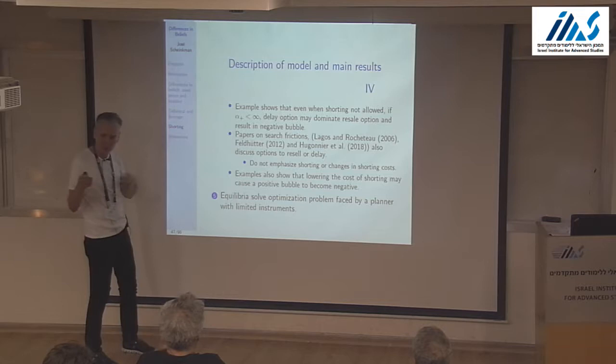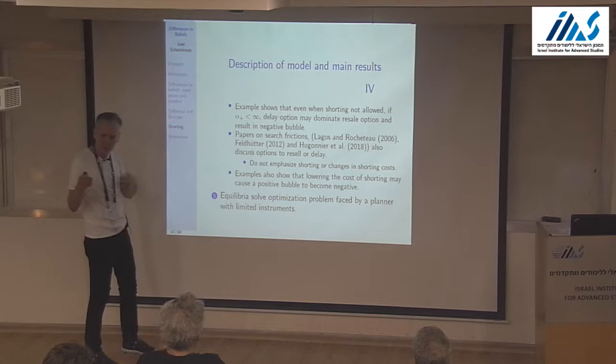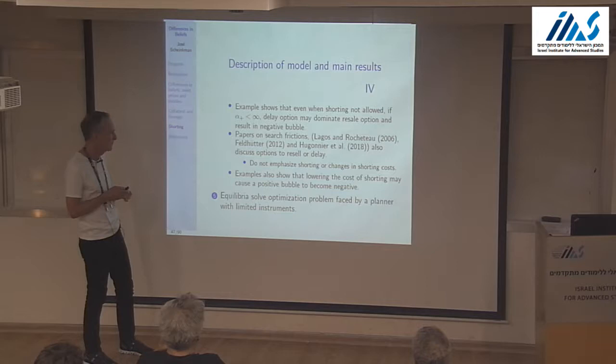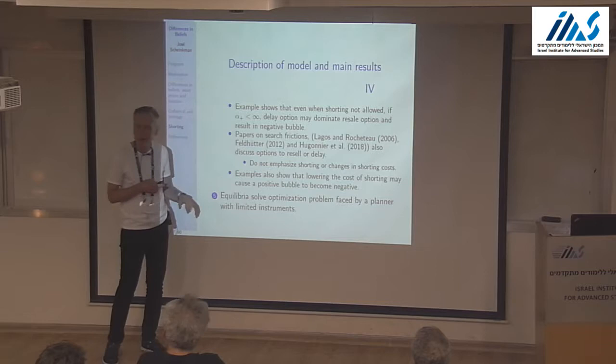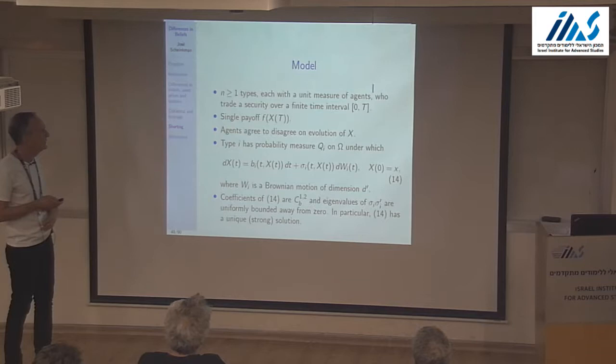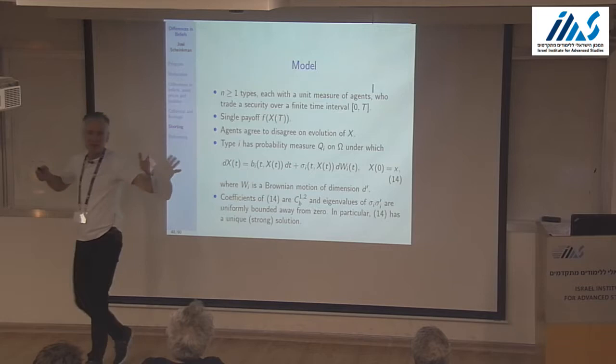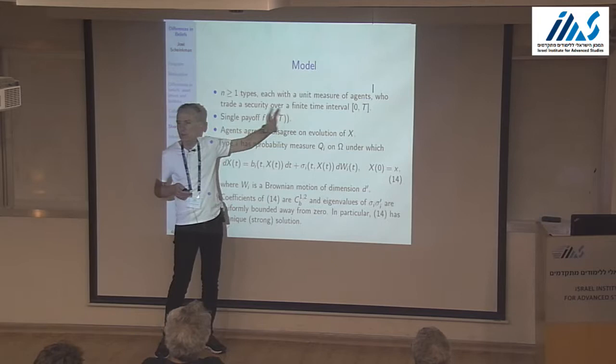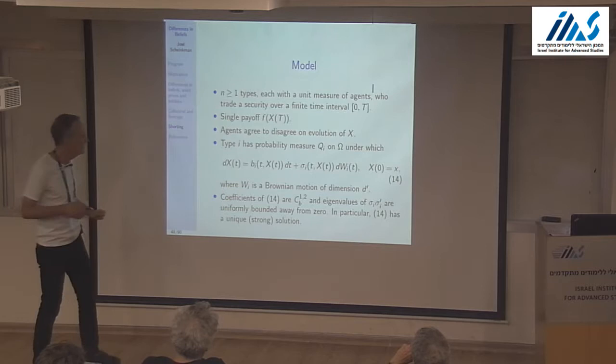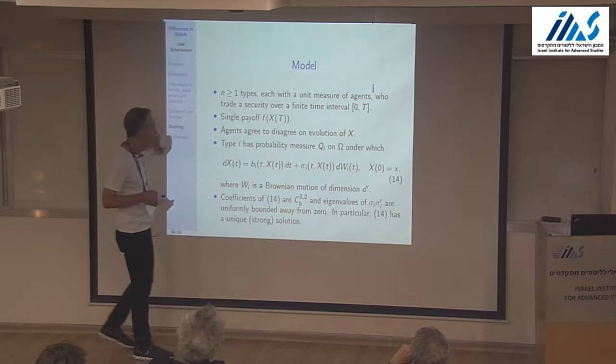There are results in the search-costs literature with similar flavor. If I have time, I'll show how the equilibrium solves an optimization problem faced by a planner, which gives a nice interpretation. There will be N types, each with a unit measure of agents, trading a security over a finite time interval [0, T]. The security gives a single payoff at time T, which is a function of a state variable x(T).